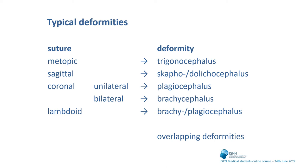Here again the affected sutures and the predictable deformity: if the metopic suture is involved, a trigonocephalus results; if the sagittal suture is involved, a scaphocephalus or dolichocephalus results. In unilateral coronal suture involvement, anterior plagiocephalus results, and in bilateral involvement, brachycephalus. If the lambdoid suture is involved, we have a brachy- or plagiocephalus depending on whether it is uni- or bilateral. Bilateral lambdoid involvement is extremely rare. Overlapping deformities are also possible, especially metopic and sagittal can be found in one patient.